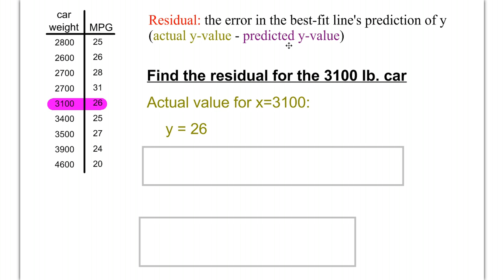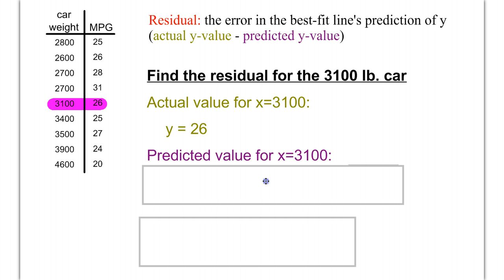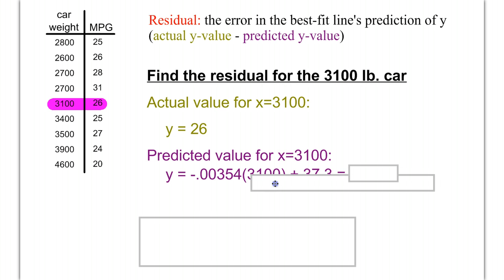We said we need to find the actual minus the predicted. So, now we need to find the predicted value when x is equal to 3,100. For that, we need our best fit line. And if you remember that from earlier, y is equal to -.00354. We're going to pop in x equals 3,100 in here, and then we're going to add in our y-intercept. So, we have our slope, our y-intercept, and we're plugging in 3,100 for x.